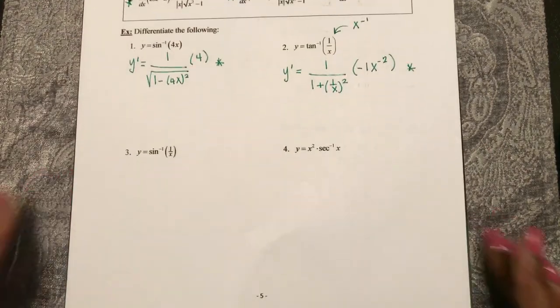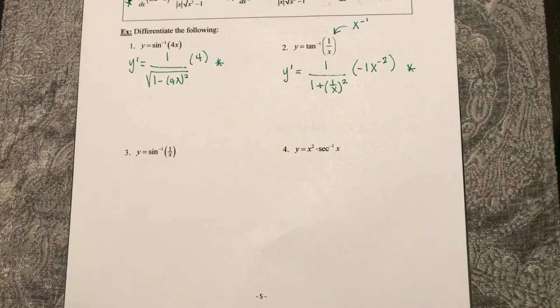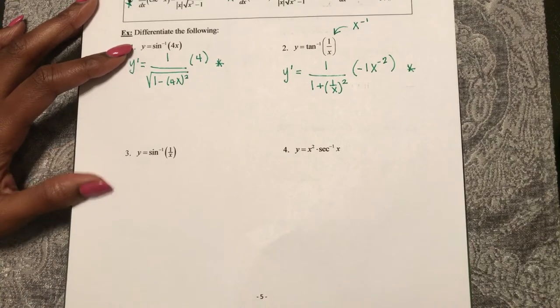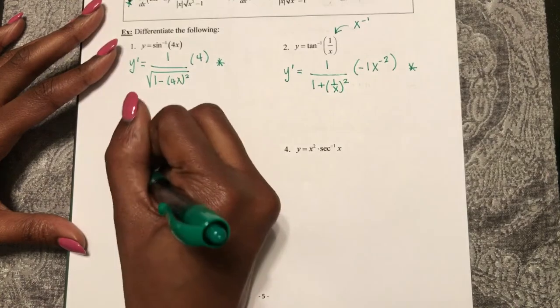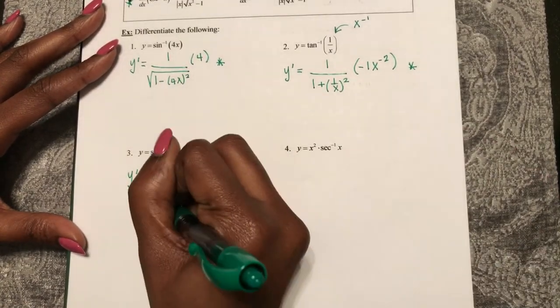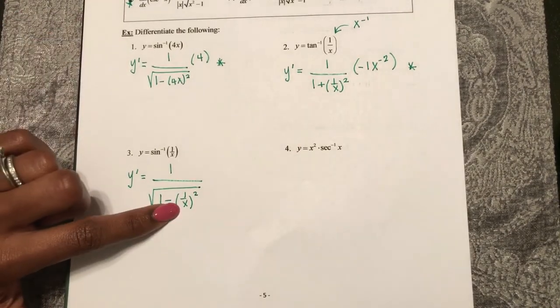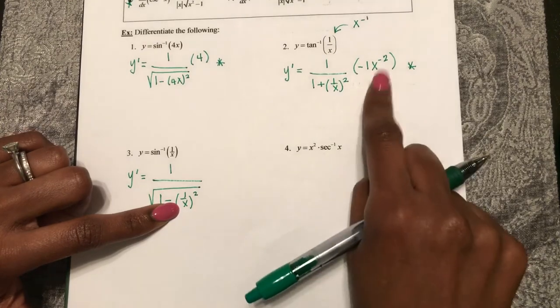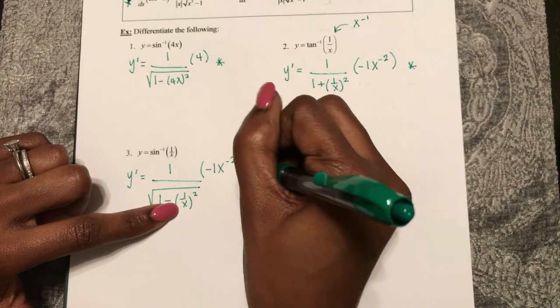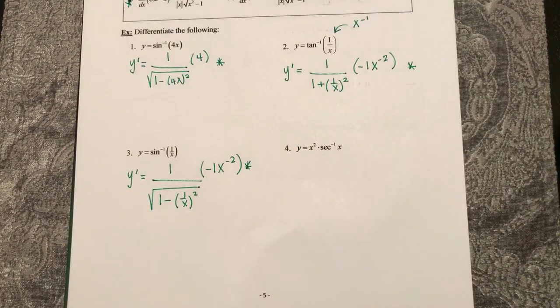Now in number three, we have sine inverse of 1 over x. We know that the derivative of sine inverse is 1 over square root 1 minus x squared. So y prime is 1 over square root 1 minus 1 over x squared. And then the derivative of 1 over x, we just did that, chain rule, negative 1x to the negative 2. So once again, unsimplified answers. We'll practice simplifying together.